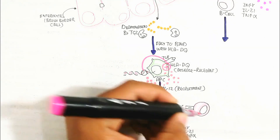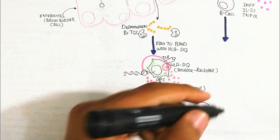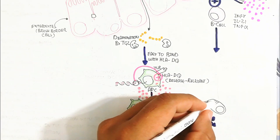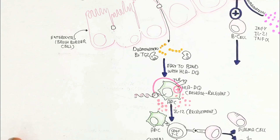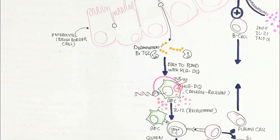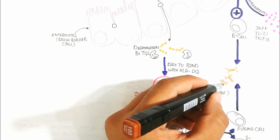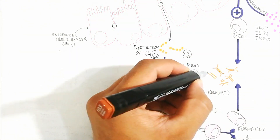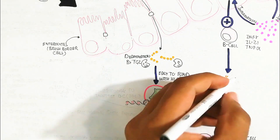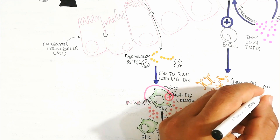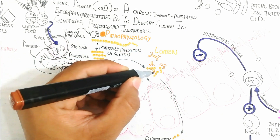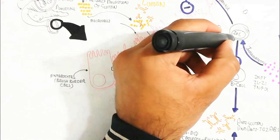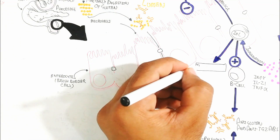Intraepithelial leukocytes also recruit B cells through cytokine production. The CD4 T cells interact with naive B cells to proliferate into memory B cells and plasma cells. These plasma cells produce antibodies — anti-gliadin and anti-transglutaminase-2 antibodies. Both types of antibodies target gluten and gliadin, causing enterocyte damage leading to vitamin B12 deficiency, iron deficiency, and anemia.